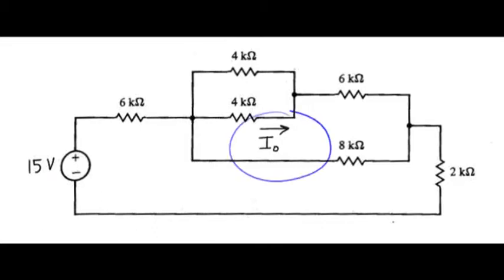In this problem, we seek the current called I sub zero, or I out if you like, and we want to do this using the proportionality method. So we begin with some initial guess, and I'll use one milliamp as my starting point.